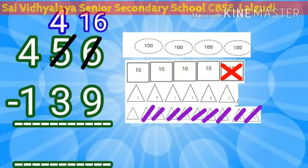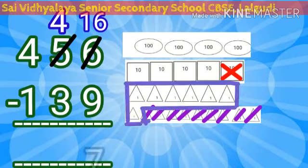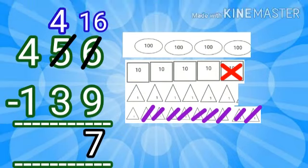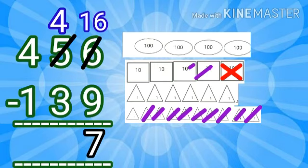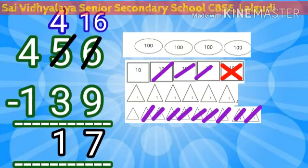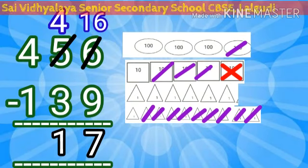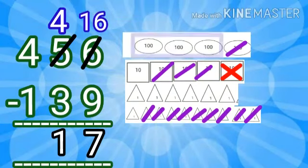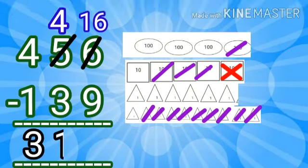Seven one cards are left — let's write seven in the ones place. Now we should subtract three from four — let's strike off three ten cards. One ten card remains, so write one in the tens place. Now let's subtract one from four in the hundreds place — strike off one hundred card. Three hundred cards are left — write three in the hundreds place. The answer is 317.